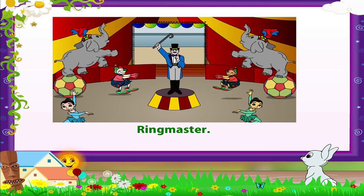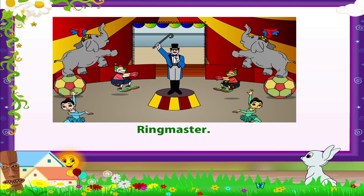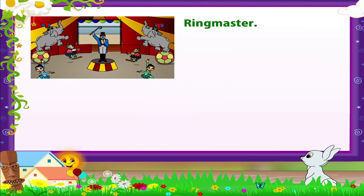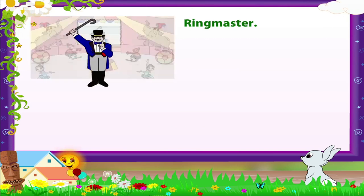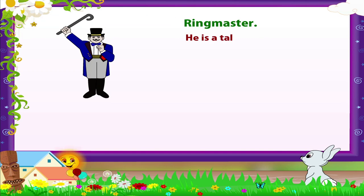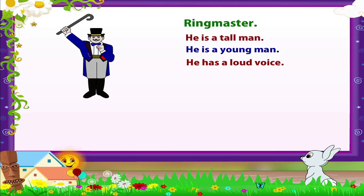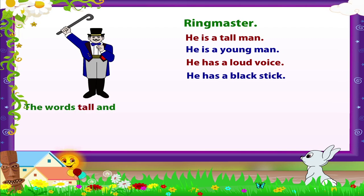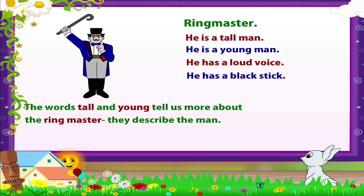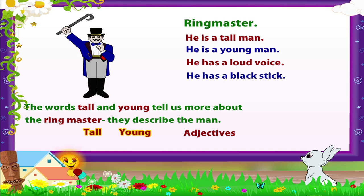He is a young man. Doesn't he have a loud voice? Rainbow, can you help me choose the different words I used to describe the ringmaster? Yes! He is a tall man, he is a young man, he has a loud voice, he has a black stick. The words 'tall' and 'young' tell us more about the ringmaster — they describe the man. Tall and young are called adjectives. The other adjectives are 'loud,' which describes his voice, and 'black,' which describes his stick.